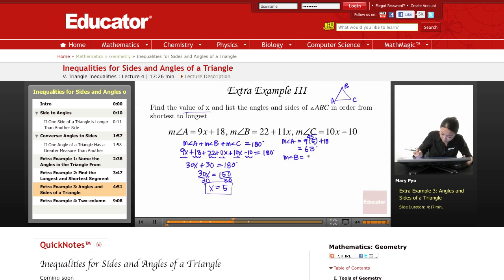Measure of angle B, 22 plus 11 times 5. So that's going to be 77 degrees. And then measure of angle C is 10 times 5 minus 10. That's 50, that's 40 degrees.